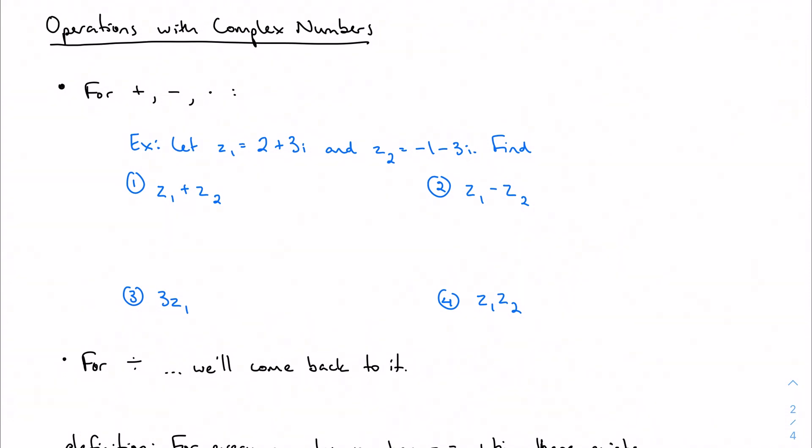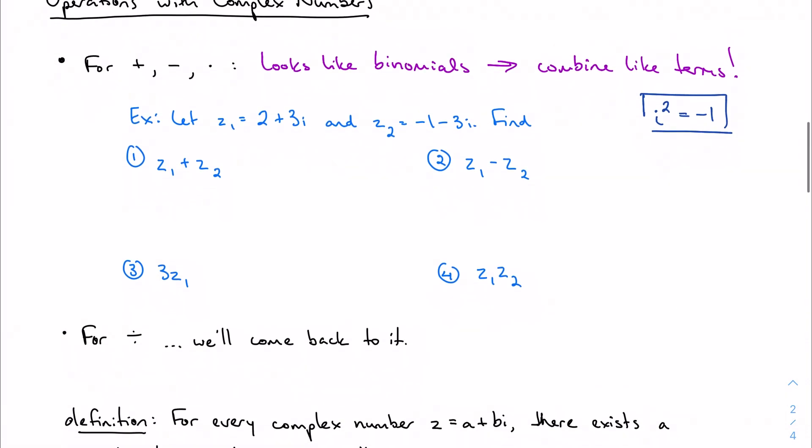Getting into operations with complex numbers. For most operations, you're going to notice this looks a lot like when we added, subtracted, and multiplied binomials, and we're just going to combine like terms. We need to watch out for one thing when we multiply: remember the identity I wrote at the beginning, which is that i squared is negative 1. My final answer should always be in Cartesian form, so I want to make this substitution whenever I can.